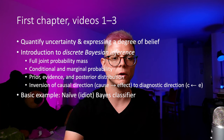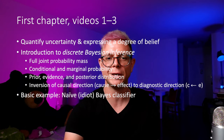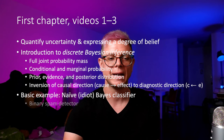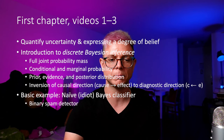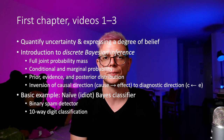We're going to have also two concrete examples of a naive Bayes classifier: a binary spam detector and then finally a 10-way digit classification.